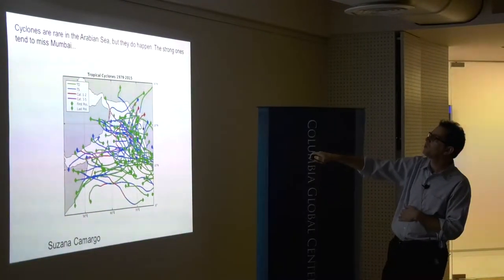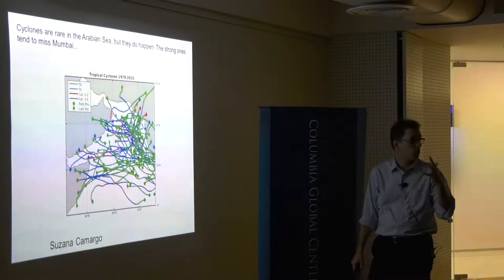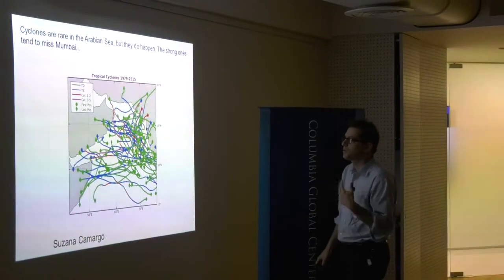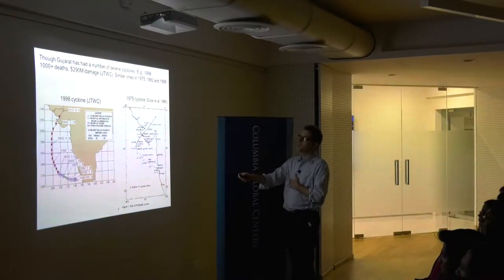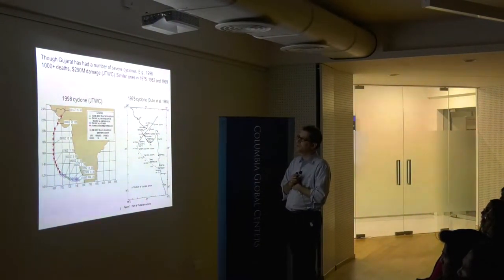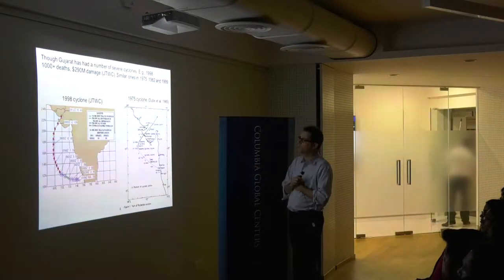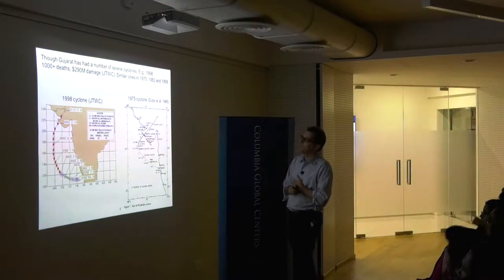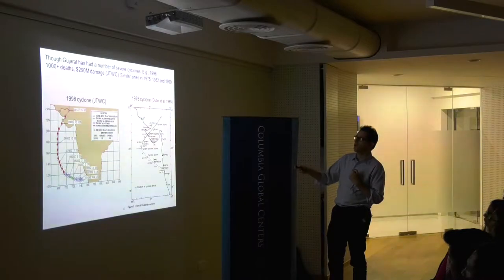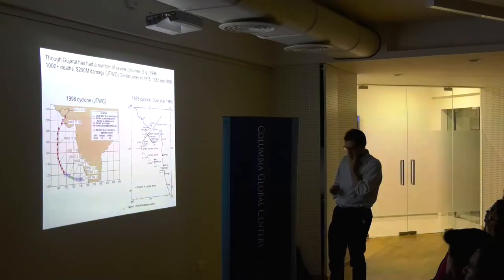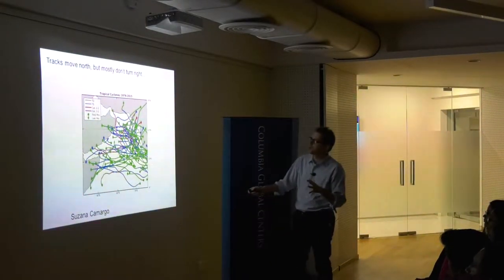There have been four or five intense cyclones that struck Gujarat since the 1970s. One in 1998 is estimated to have killed over a thousand people and caused 290 million US dollars in damage. Most of these happened in the pre-monsoon season — May or June — though the 1982 one happened in November, which is interesting for a reason I'll get to in a moment.